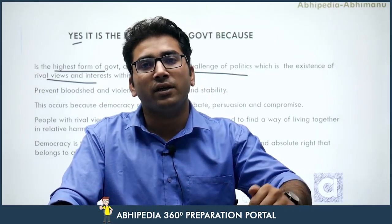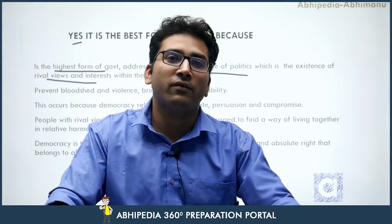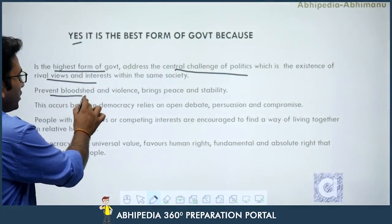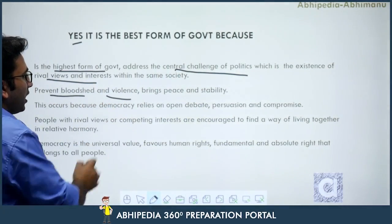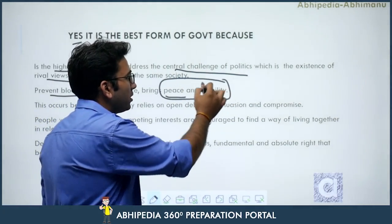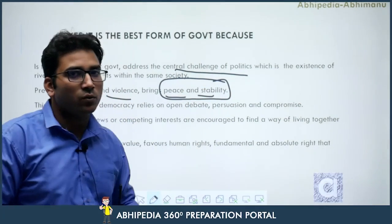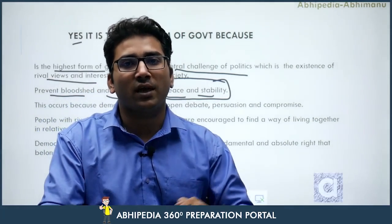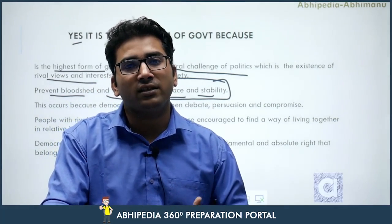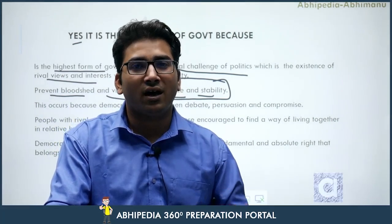Democracy provides a systematized allocation of resources to the people in a calm, peaceful, and harmonious manner. Second, it prevents bloodshed and violence and brings peace and stability — two important pillars of democracy — which run on principles of peace and stability and avoid violence, bloodshed, and arms.